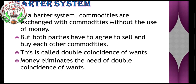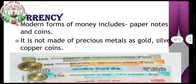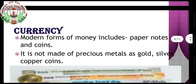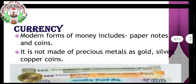This is called double coincidence of wants. Money eliminated the need for double coincidence of wants. We can see the short definition of barter system, which I will be giving you in the question answers.